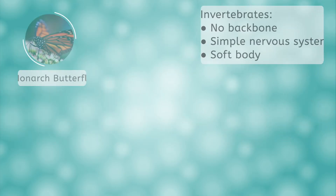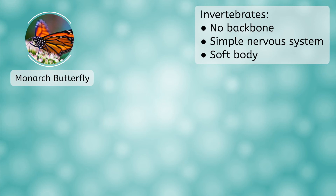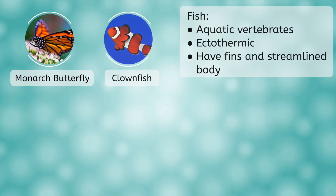First up, invertebrates. Invertebrates are animals that do not have a backbone. They also have a simple nervous system and a soft body. The next group is fishes. Fishes are aquatic vertebrates, meaning they live in the water and have a backbone, are cold-blooded so they are unable to control their body temperature, and have fins and a streamlined body shape that helps them swim.